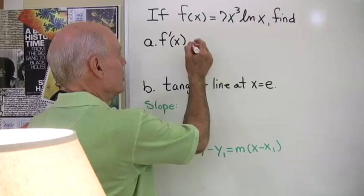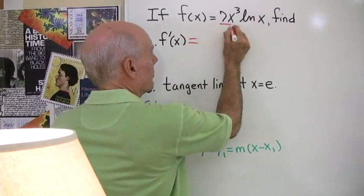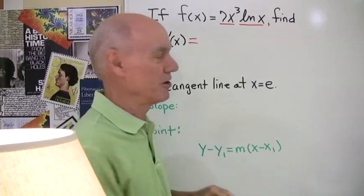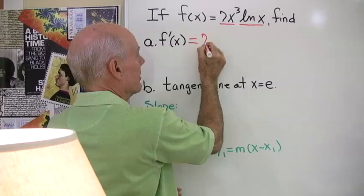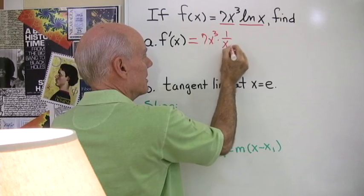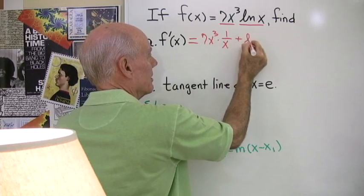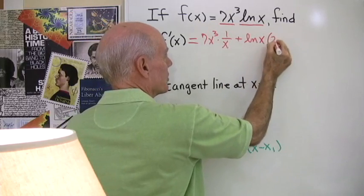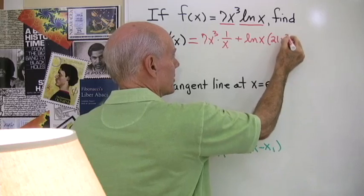So let's start by differentiating. I see I have the product of two functions right here so I'm going to differentiate using the product rule. So the first 7x³ times the derivative of the second 1/x plus the second ln(x) times the derivative of the first which is going to be 21x².